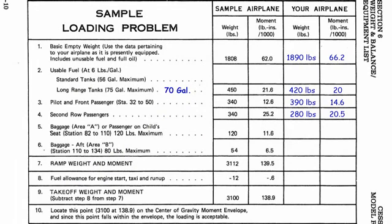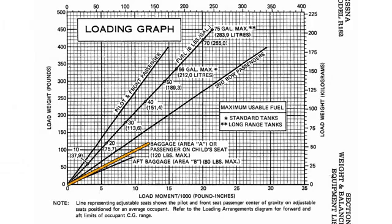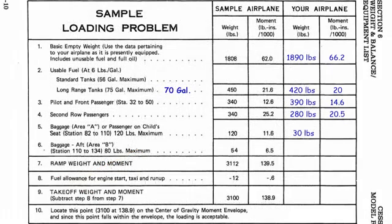Next is baggage. We're going to have about 30 pounds of baggage on this flight. Going back to the loading graph, we find the baggage line, follow 30 pounds down — the moment is 3.0. We'll put 3.0 for the baggage moment. We're not going to have any baggage in area B, so that's 0 weight and 0 moment.